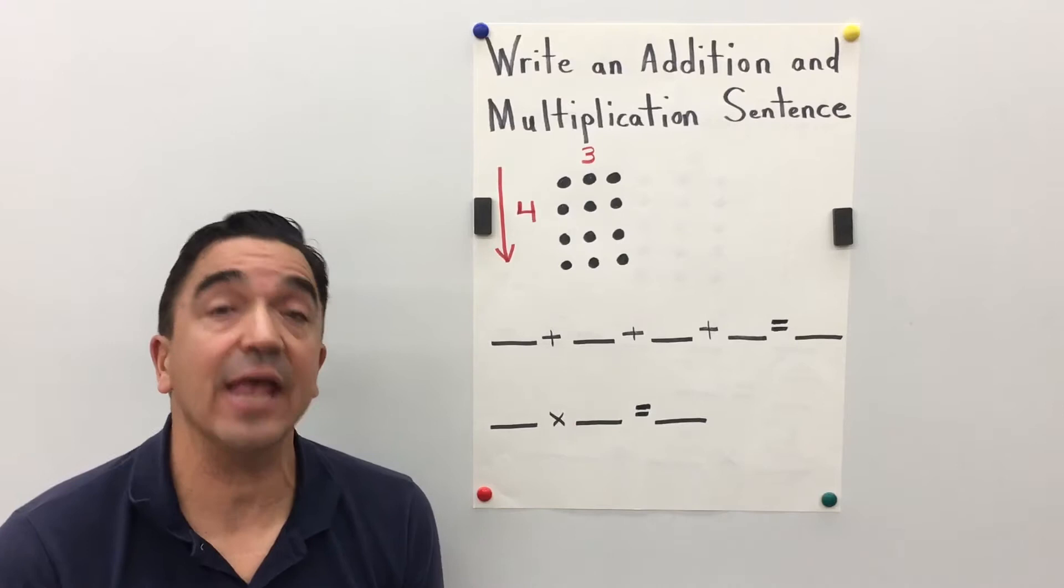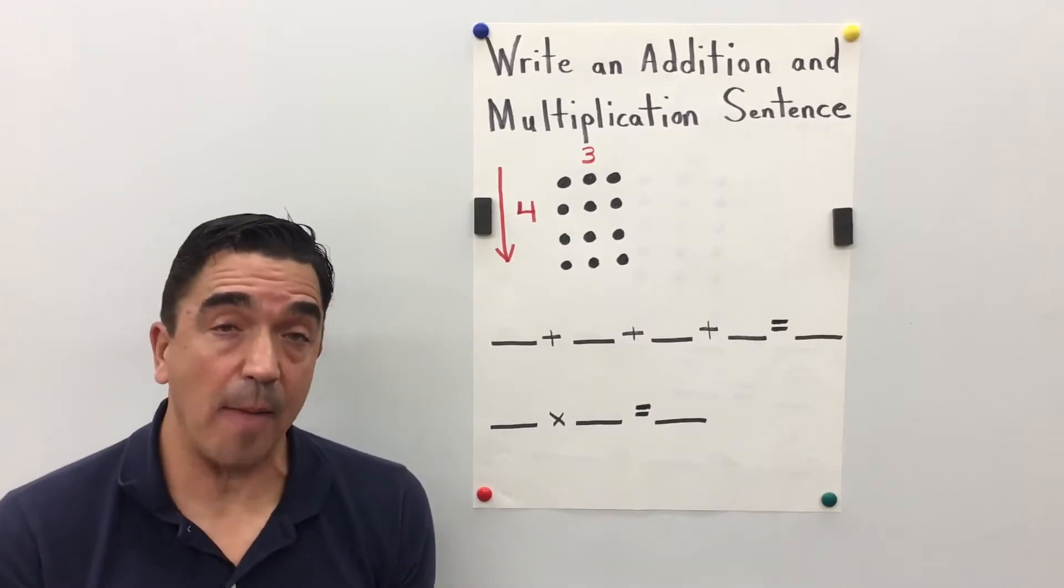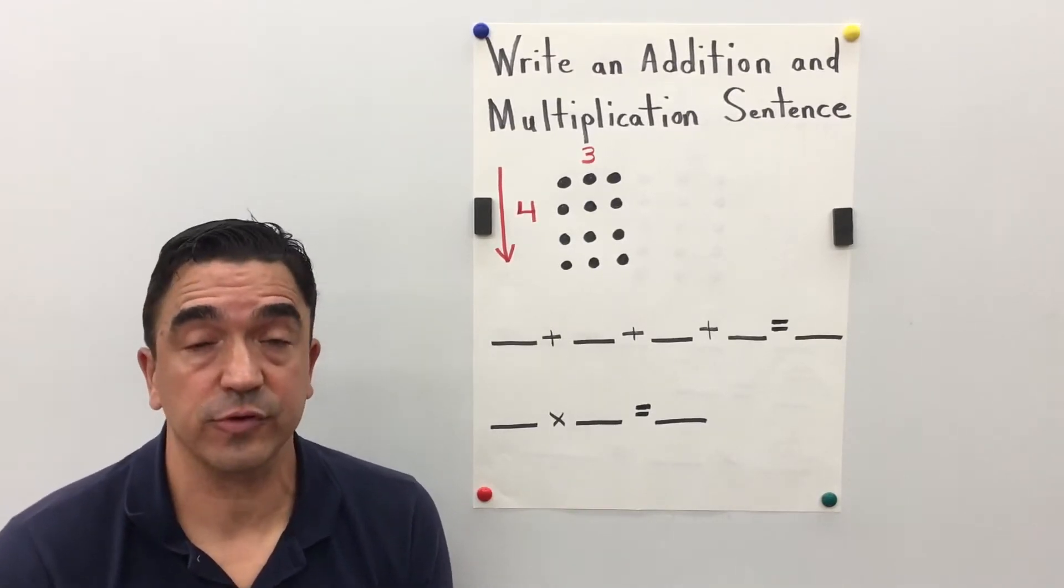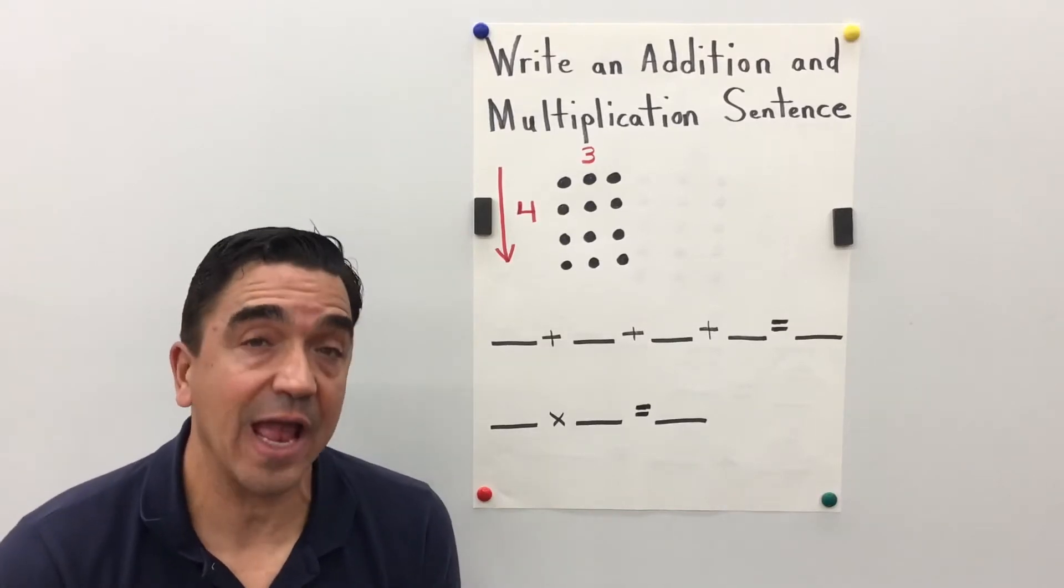An array is an arrangement of objects, pictures, or numbers in columns and rows.